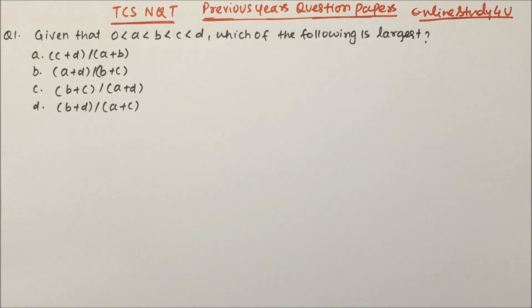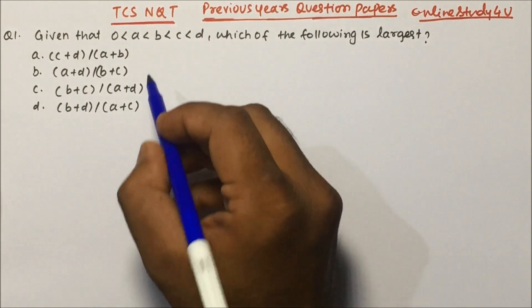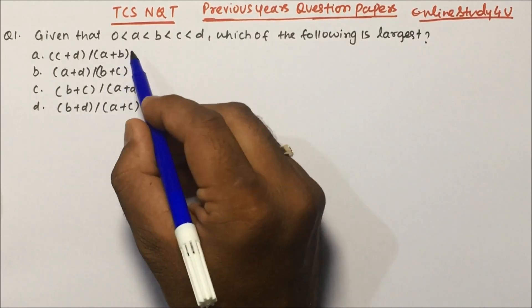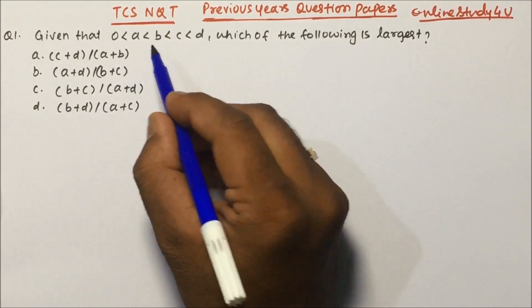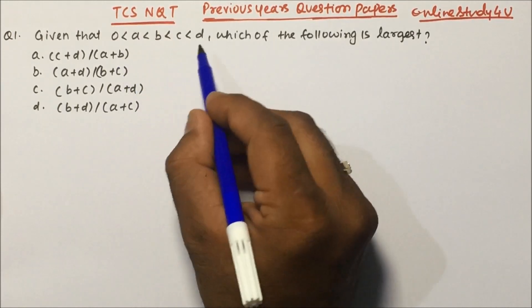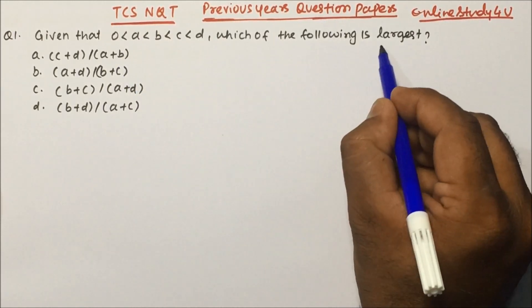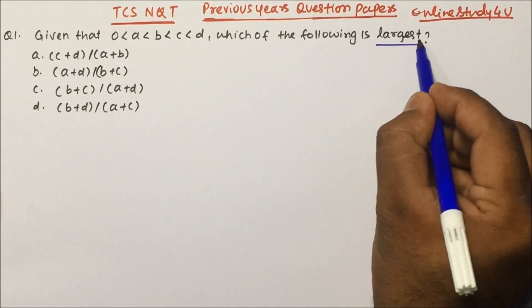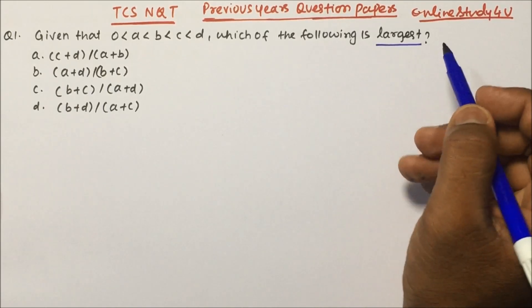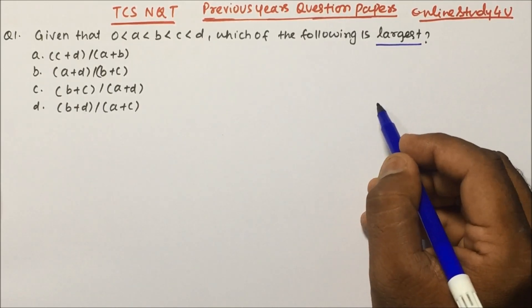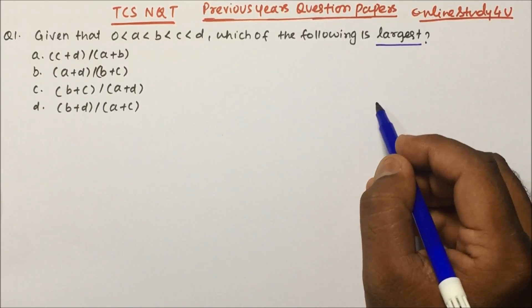Let's start with question number one. Given that A is greater than 0, B is greater than A, C is greater than B, and D is greater than C — which of the following is the largest? After seeing this question, you don't have to panic. This is a very simple question.